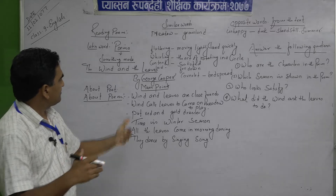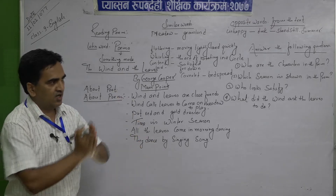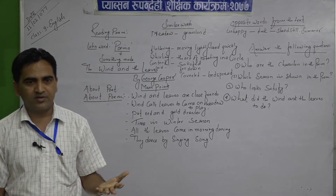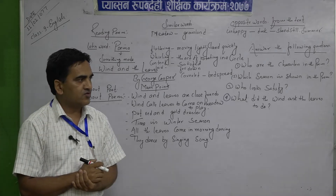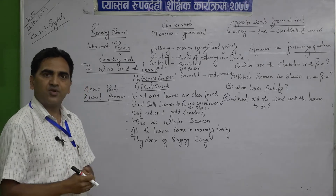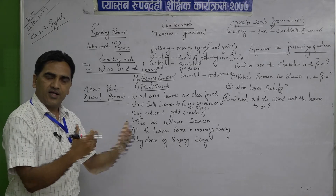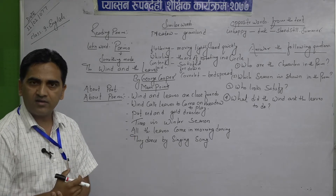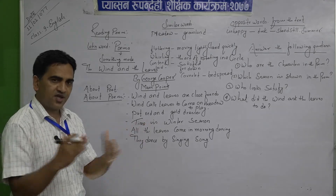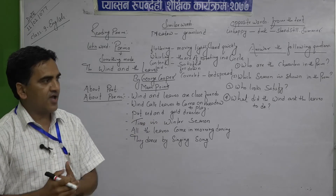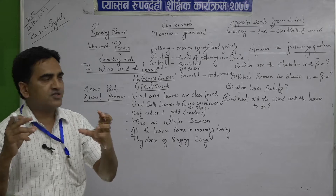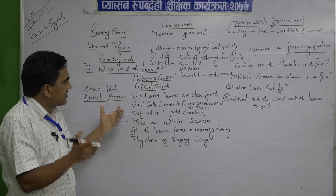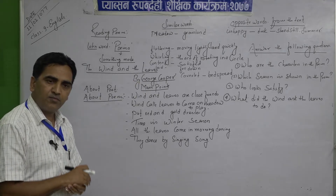In a poem there are different qualities. Poetry is one genre in literature. Just as in Nepali we read different genres, likewise in English, poem is one genre, story is one genre, play and drama are another genre. This poem is 'Wind and the Leaves' by American poet George Cooper.